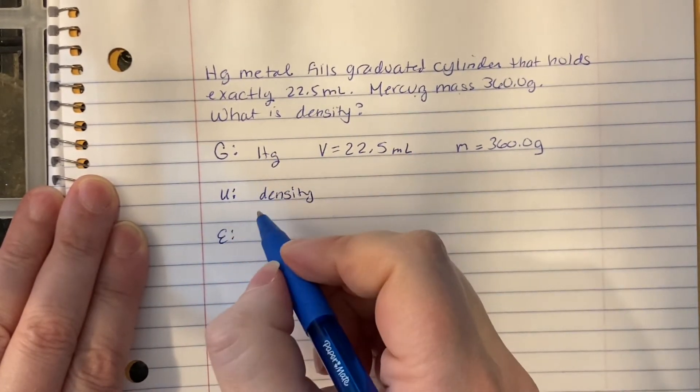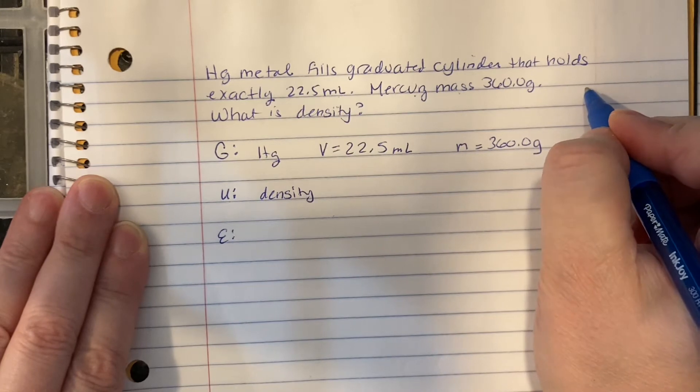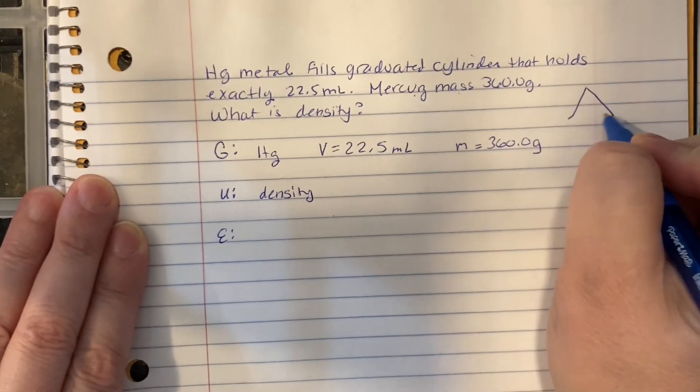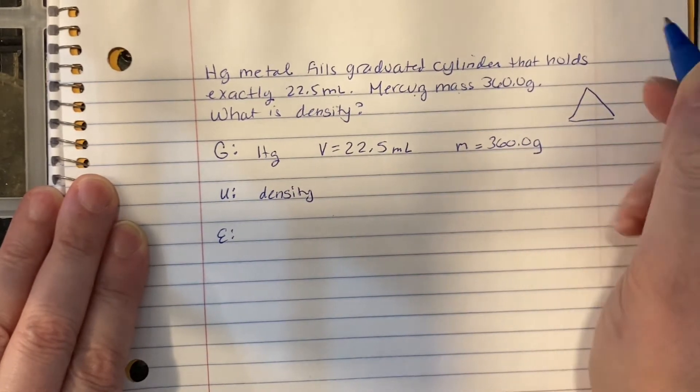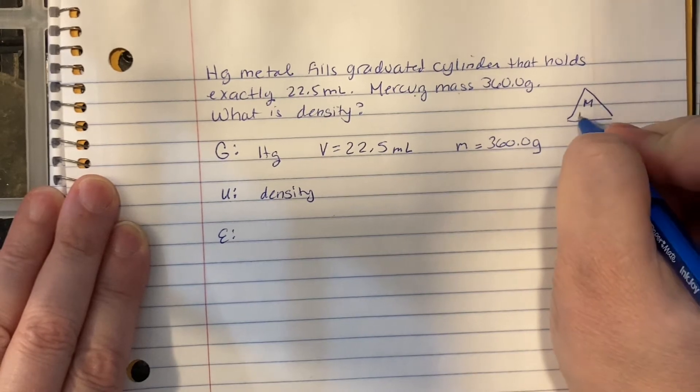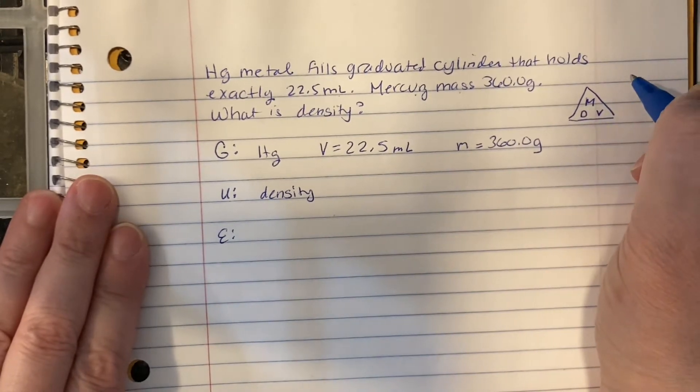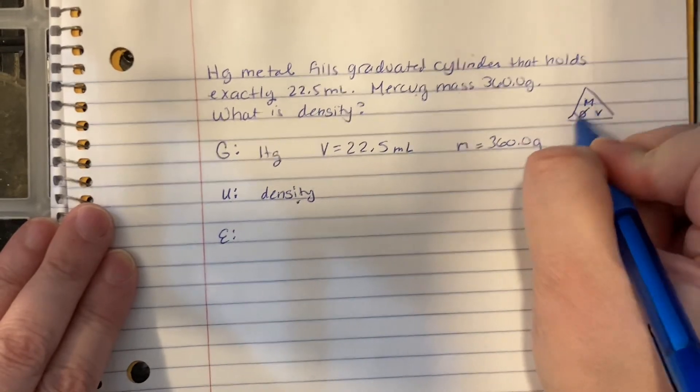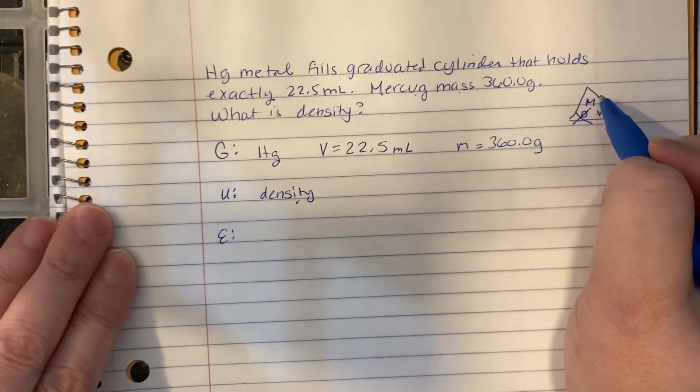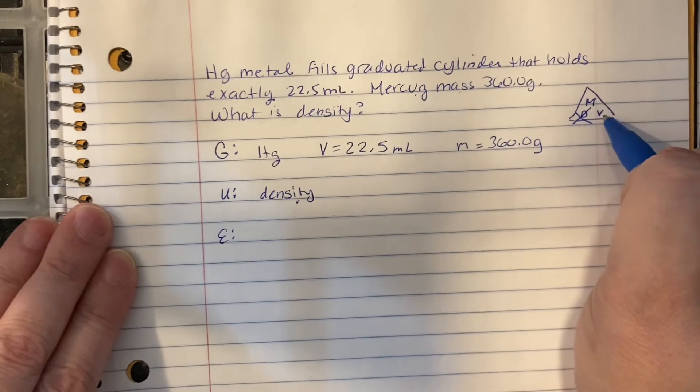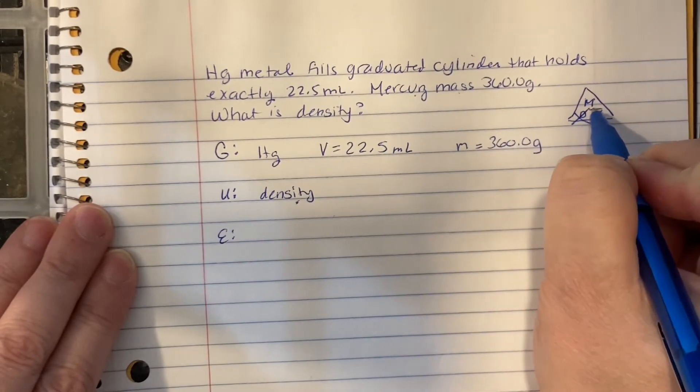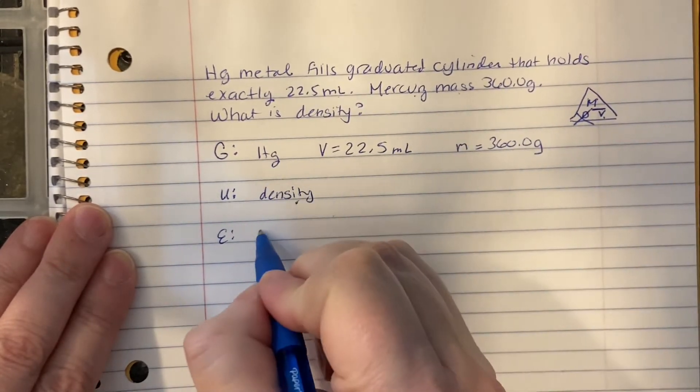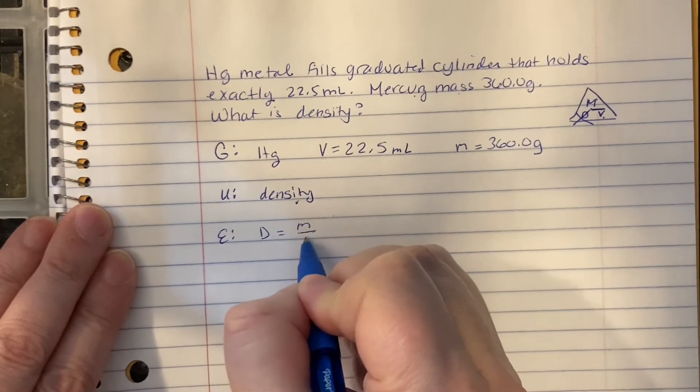E is what equation do we use? So then we are going to look at our equation. I'm going to use our little triangle here. We're solving for density, so we're going to cover up density, which means that density equals mass over volume, because it's like it has a little fraction bar there. Density equals mass over volume.